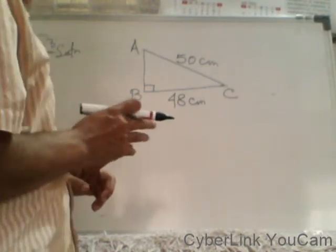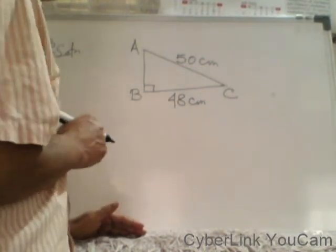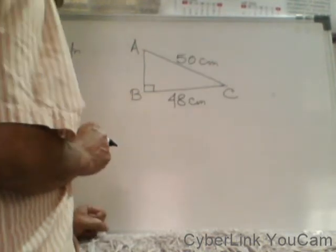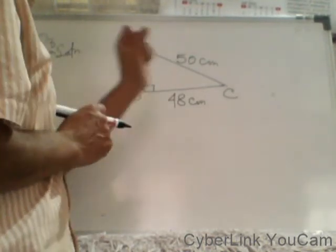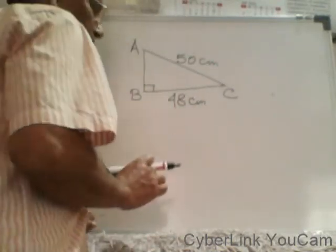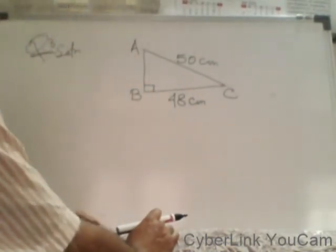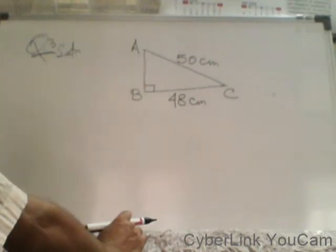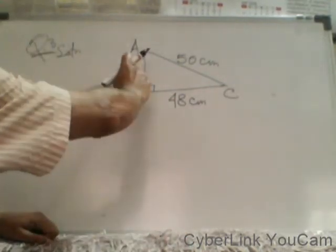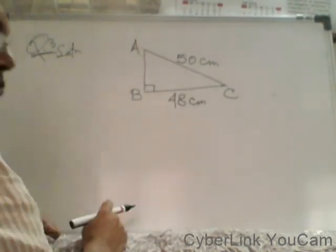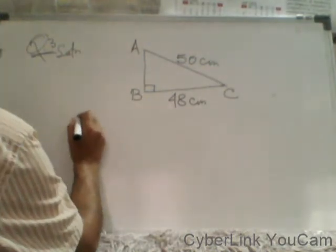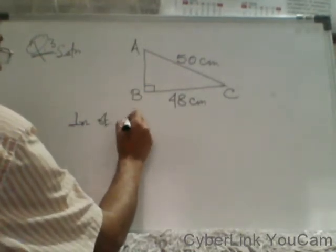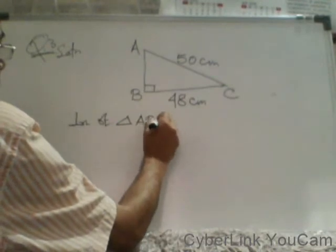From Class 7 you have learnt area equals half into base into height. Here base is given but height is not — hypotenuse is given. So first I will apply the Pythagoras theorem. In right triangle ABC, we get AB² plus BC² equal to AC².